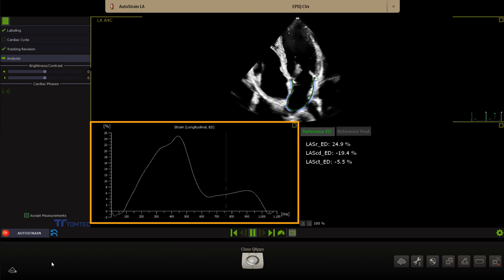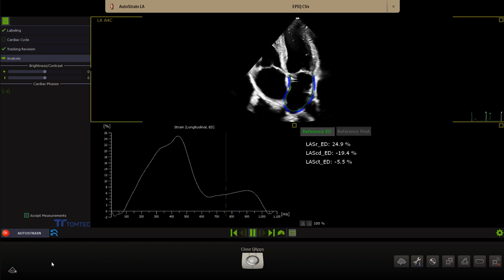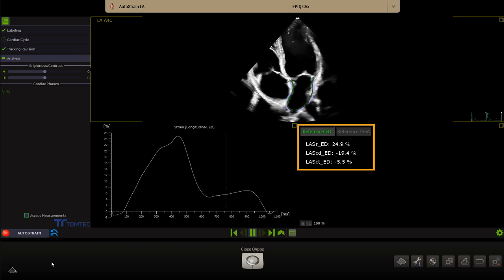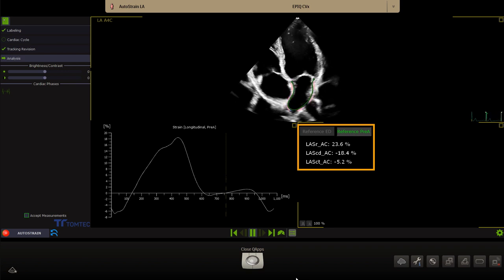The curve below shows the strain in the LA chamber over time. On the right side, values are displayed for left atrium reservoir strain, conduit strain and contraction strain with the zero strain reference at end-diastole or the zero strain reference at the onset of atrial contraction.